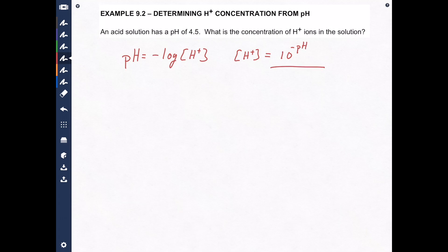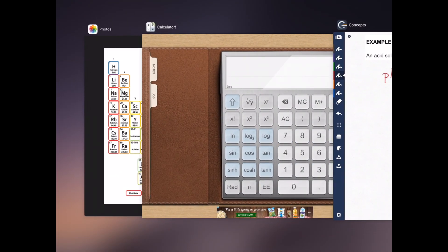And believe it or not your calculator has a button that does that function. So all we have to do is put 10 to the negative 4.5 into our calculator and it will give us the answer. So let's take a look at the calculator. Here we go.